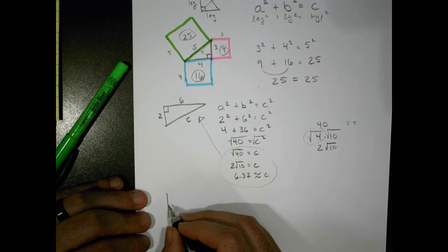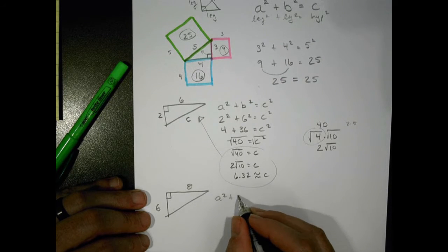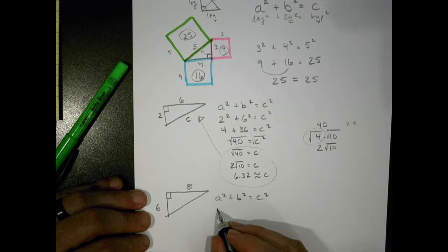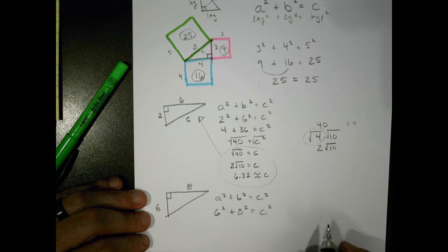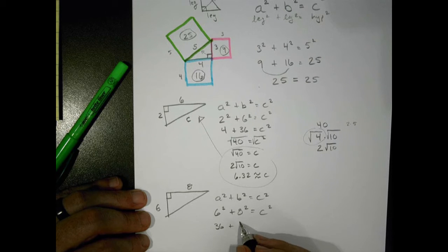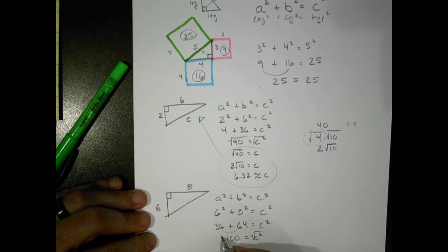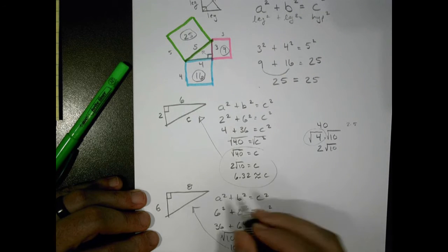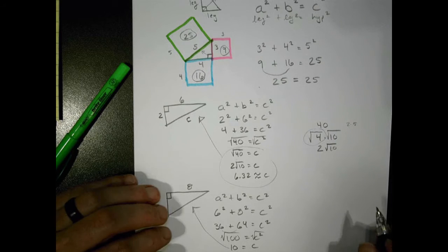Let's try another one. We have a triangle with legs of six and eight, and we're solving for the hypotenuse c. Six squared plus eight squared equals c squared: 36 plus 64 equals c squared. Combining those gives us 100 equals c squared. Taking the square root of both sides, the square root of 100 is 10. So c equals 10. Sometimes we get nice numbers — sometimes not.